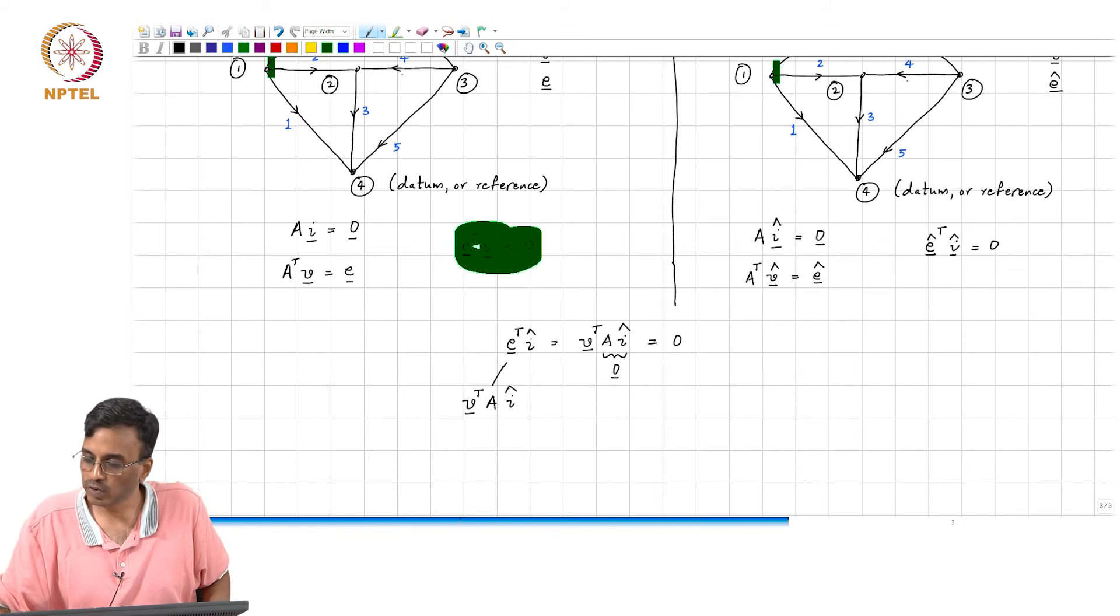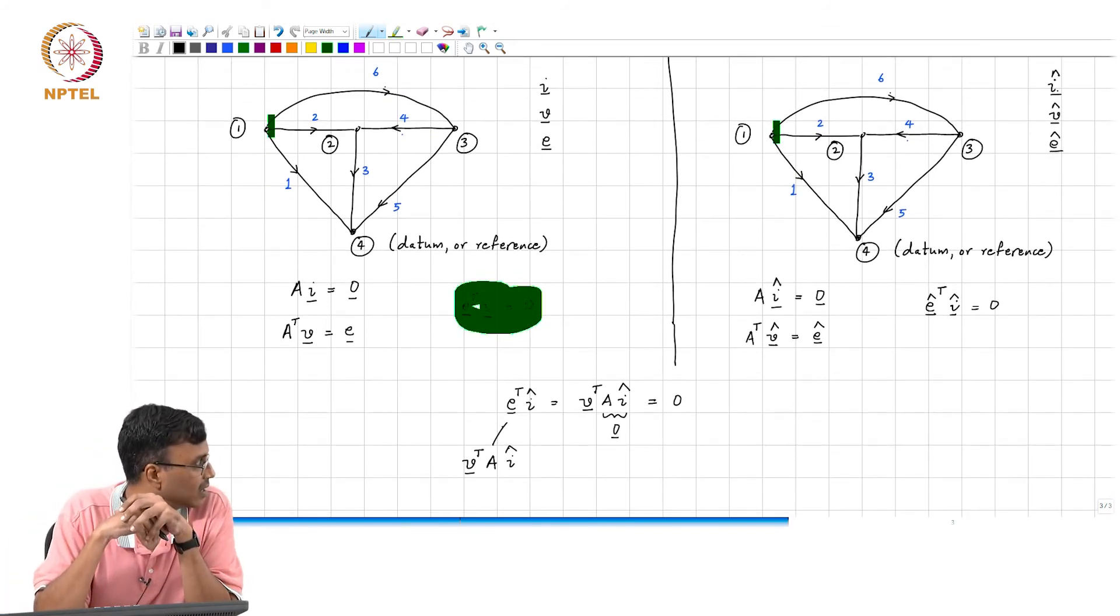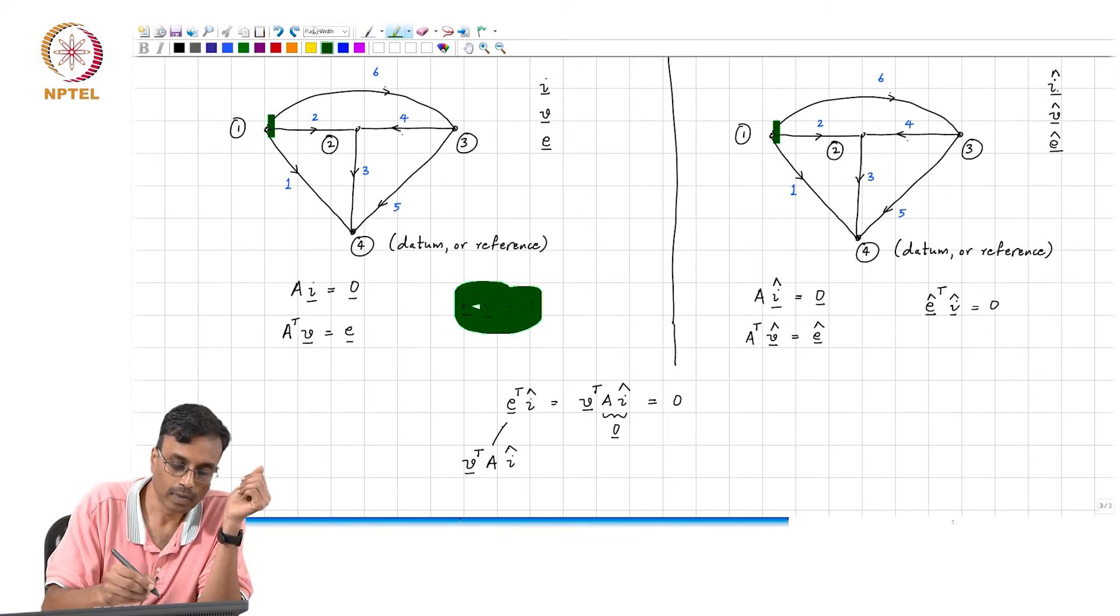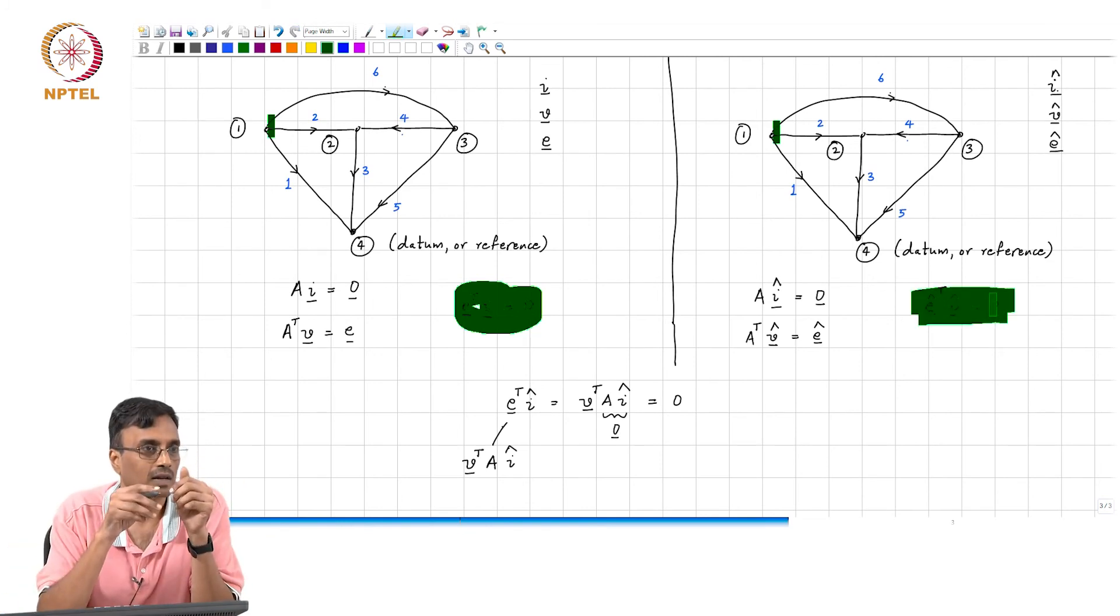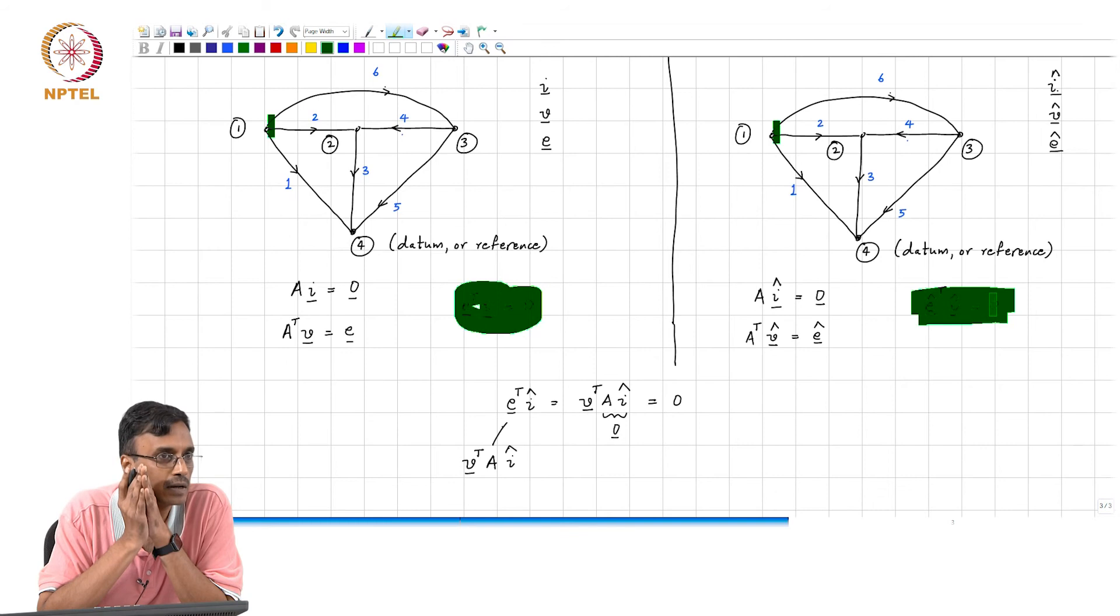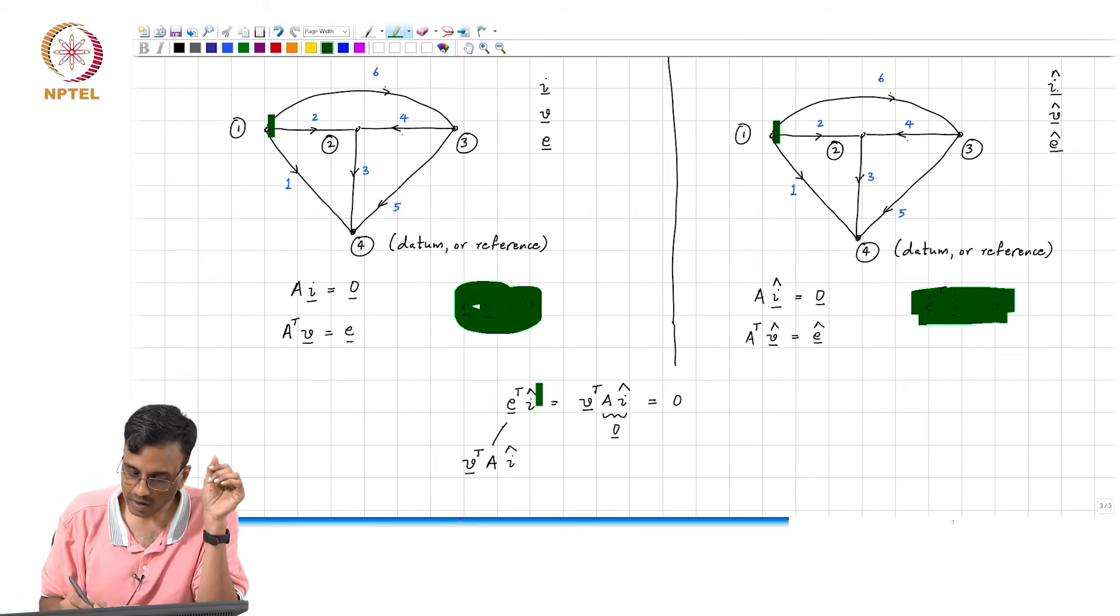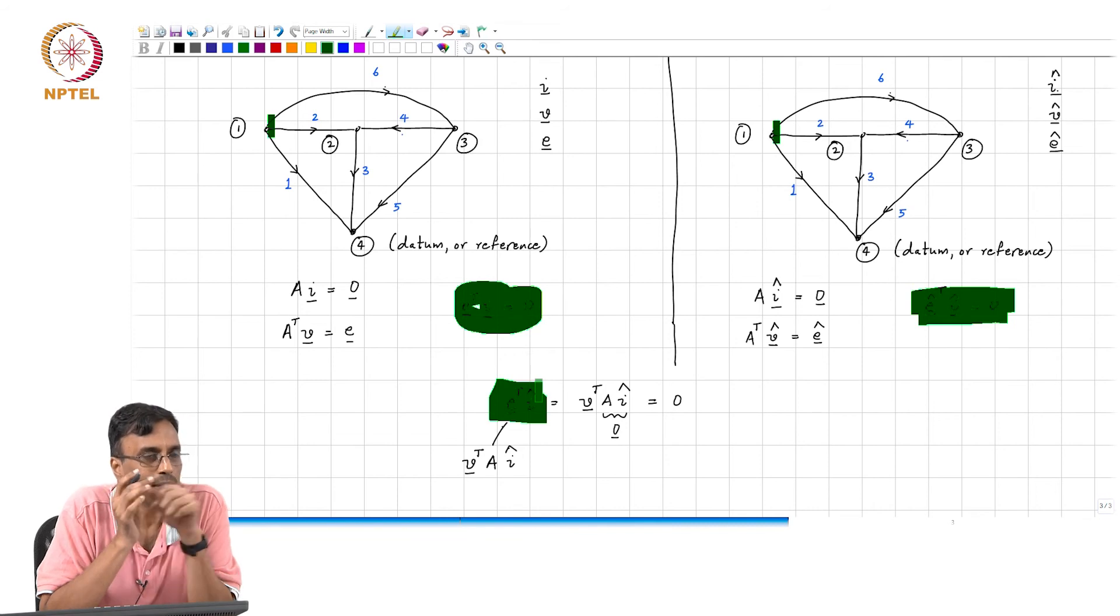So, this throws up the somewhat surprising fact. These two being 0 is no surprise at all. They have something that you physically expect. But what is very surprising is the fact that, you take the, you find this within quotes some power like quantity, where you multiply the voltages in one branch,